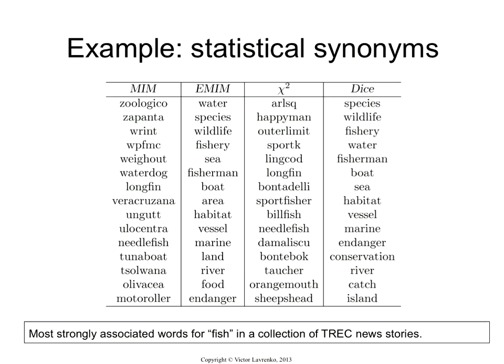Are they good? No — well, they're good to various degrees of goodness. If you look at mutual information by itself, the ones in that column: longfin, yan, middelfish, tuna boat — those are all certainly related to fish, but those aren't the kind of terms that would pop into your head immediately. Same for chi-square: you get lingcod, longfin, needlefish again. They're certainly fish, but they're not the most natural kinds to think of.